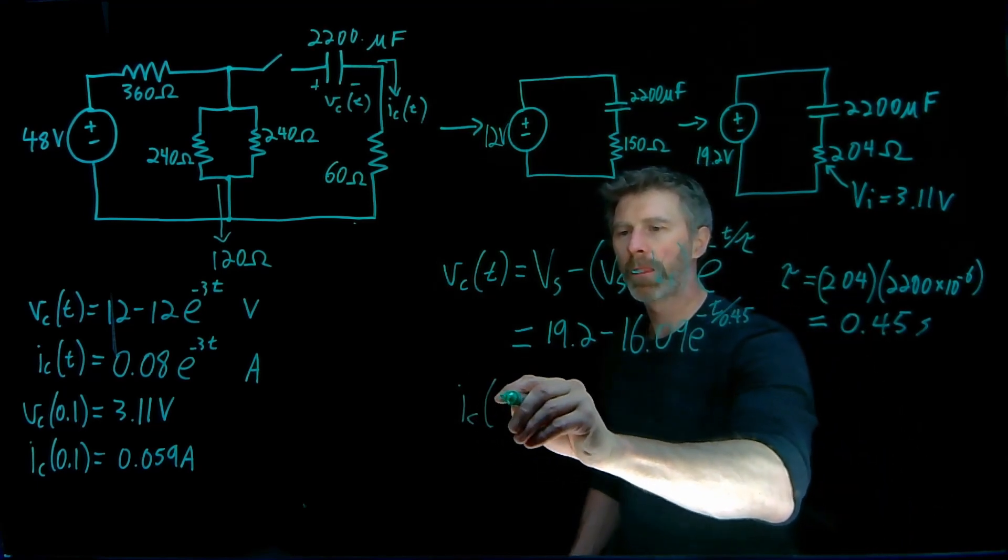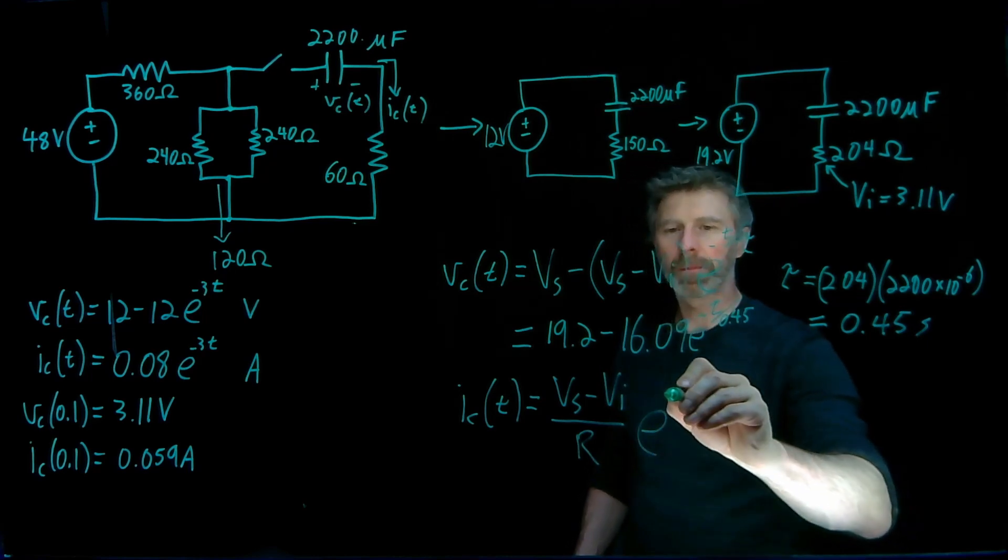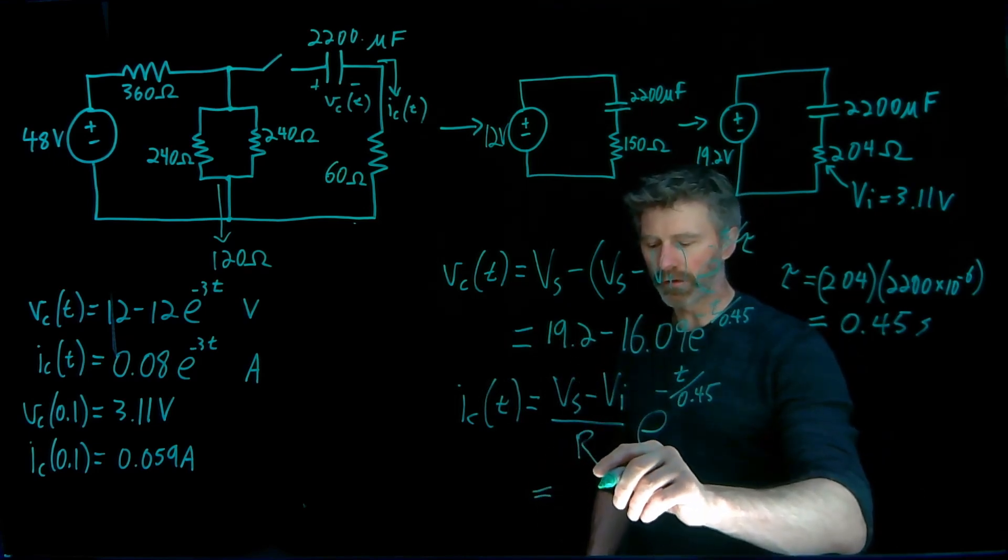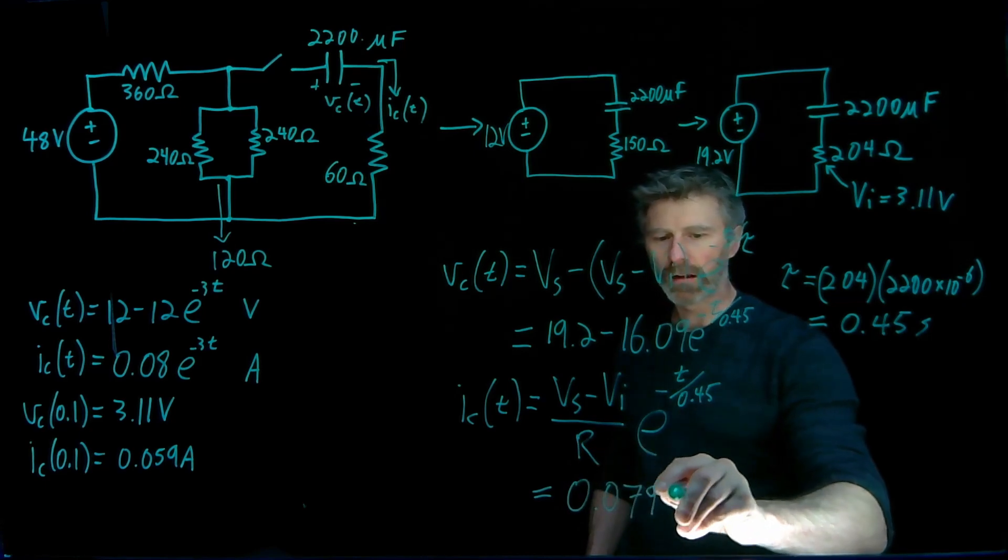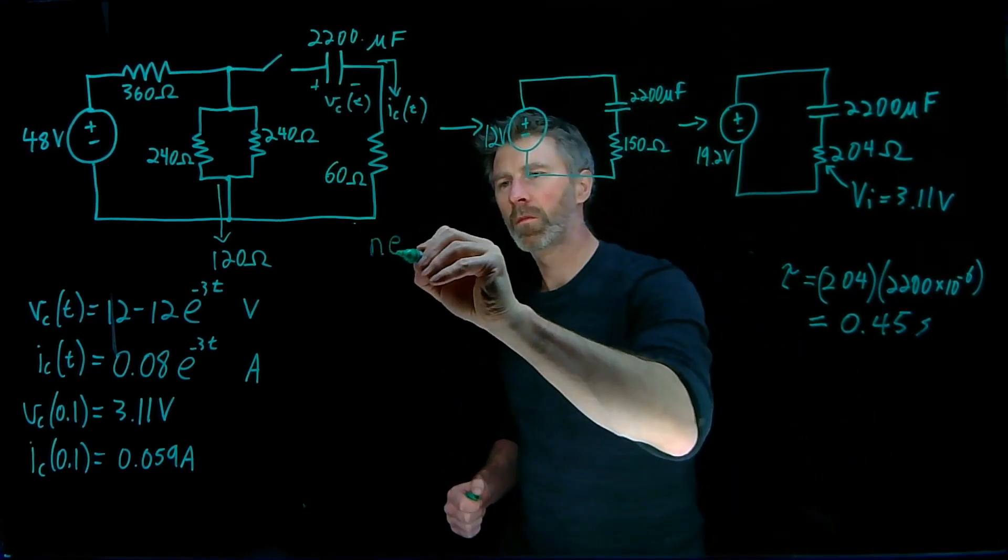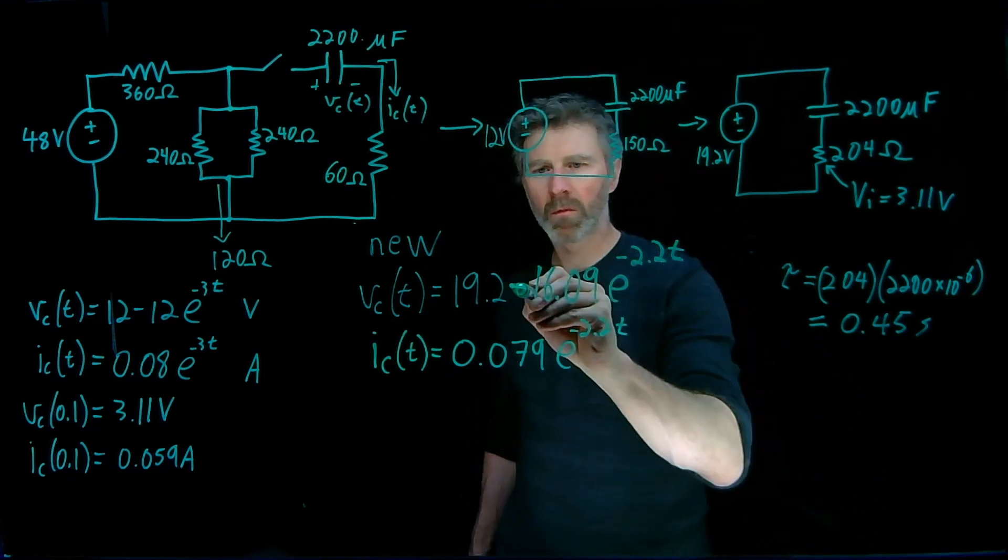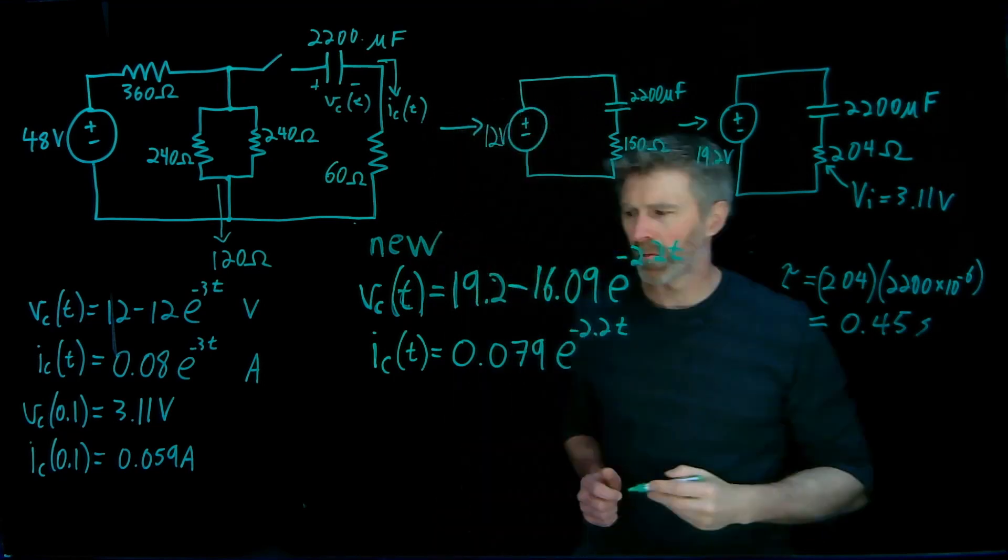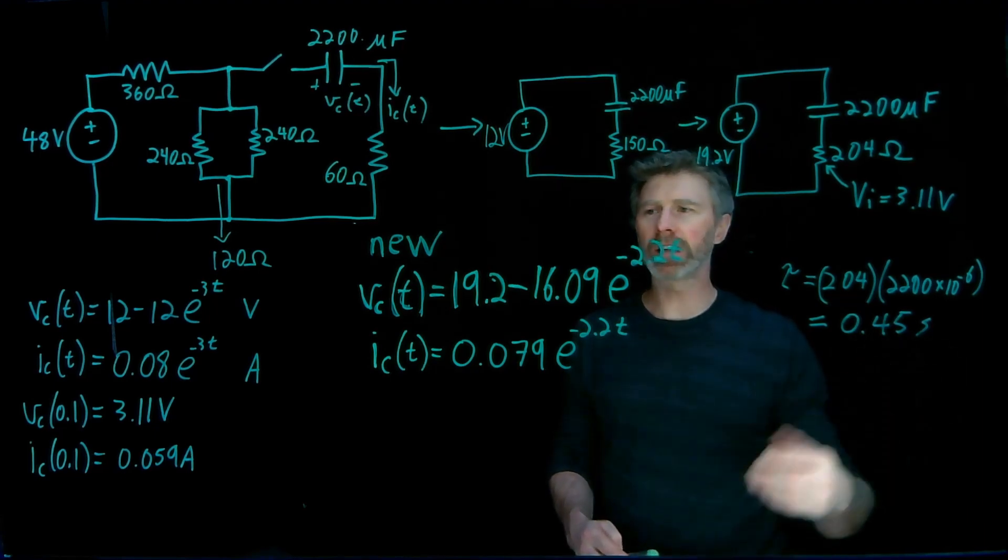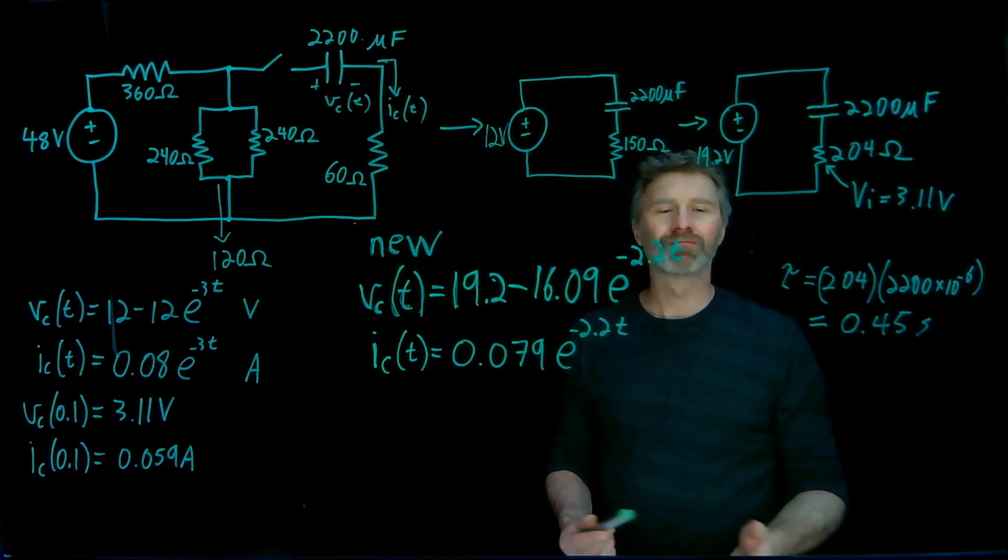And our new current is Vs minus the initial voltage over R times e to the negative t over 0.45 again. Well, Vs minus Vi, 16.09 over 204 gives me 0.079 e to the negative 2.2 t. So now that we have the equations, all sorts of things you can do. You can figure out the voltage or the current at a particular point in time. You can figure out how long it'll take to charge up to a certain volt value. You can figure out how long it's going to take to fully charge up to the 19.2 volts. All sorts of things.